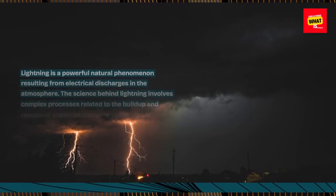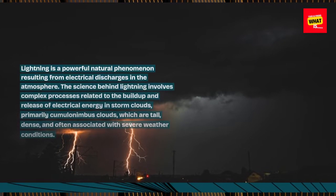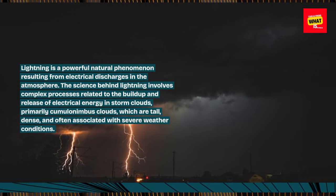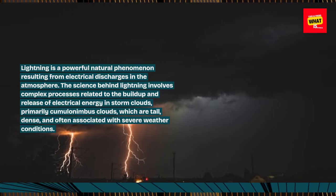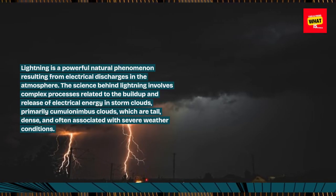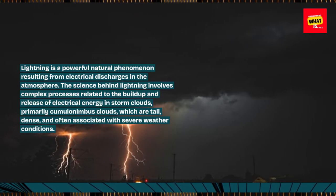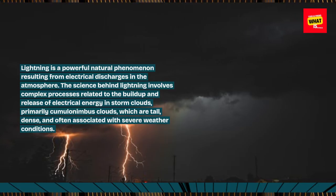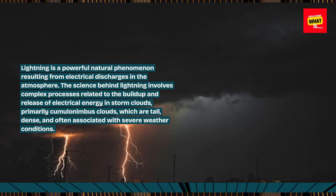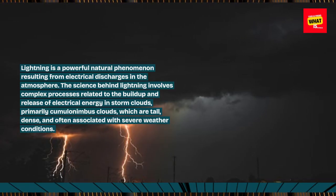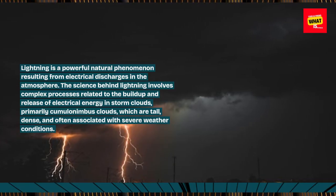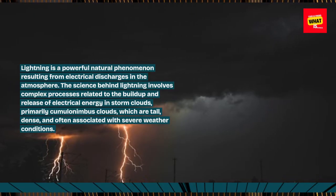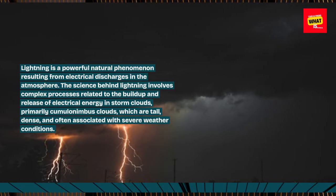Lightning is a powerful natural phenomenon resulting from electrical discharges in the atmosphere. The science behind lightning involves complex processes related to the buildup and release of electrical energy in storm clouds, primarily cumulonimbus clouds, which are tall, dense, and often associated with severe weather conditions.